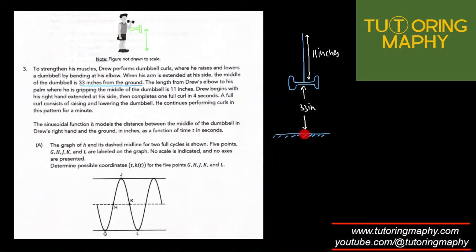If G is the starting position, because he starts from this position, this can be (0, 33). I know that L is where he completes one cycle, and one cycle is four seconds.